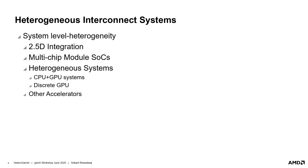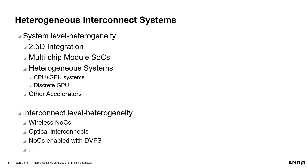Heterogeneity in modern systems is, however, not limited to 2.5D integrated architectures. Several other forms of architectures constitute heterogeneity in similar or varied forms. Heterogeneous systems such as CPU plus GPU architectures have sub-networks and multiple clock domains to operate different accelerators. In addition to system-level heterogeneity, modern systems could also bring in interconnect-level heterogeneity, in the form of modern wireless NOCs, optical physical links, and even DVFS within NOCs.